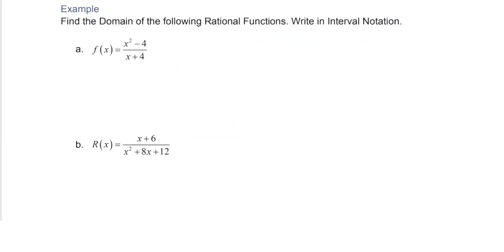We'll find domain and write it in interval notation. Recall that when we have a rational function, we simply want to exclude values that cause division by zero. We find those by setting the denominator equal to zero. Subtracting 4 on both sides gives x equals negative 4, and that's our restriction.